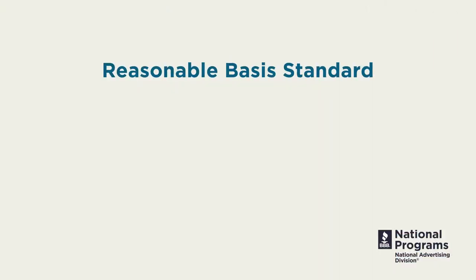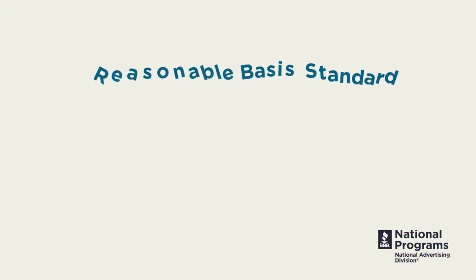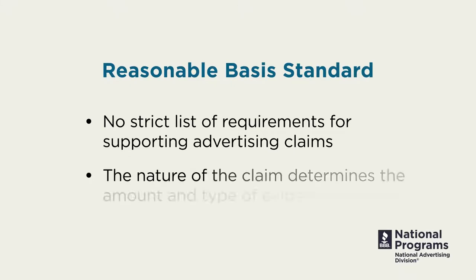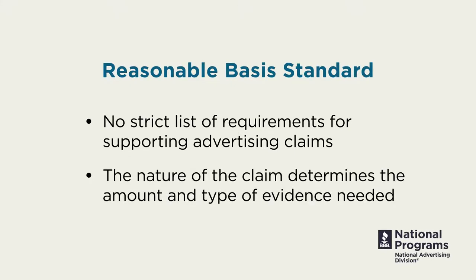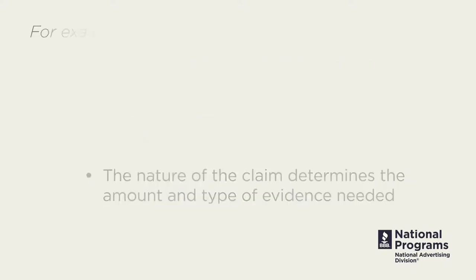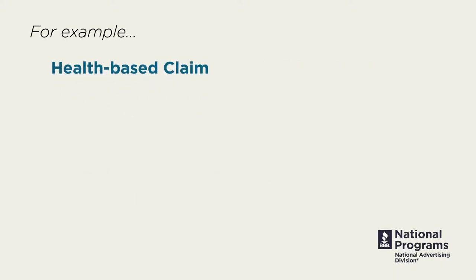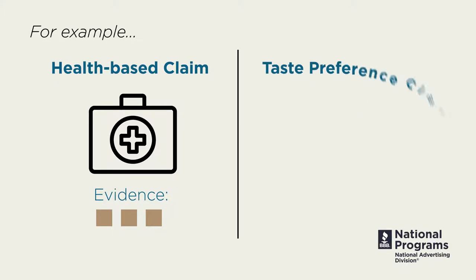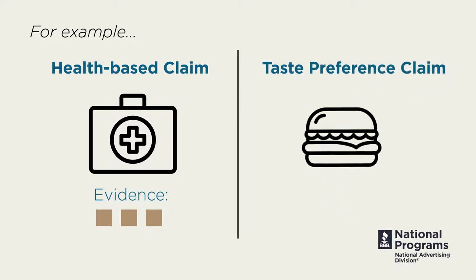The reasonable basis standard is flexible, which means there's no strict list of requirements for supporting advertising claims. Rather, the nature of the claim determines the amount and type of evidence needed. For example, if an advertiser is making a health-based claim about a medical device, they will need to provide different evidence than an advertiser making a taste preference claim for a food product.